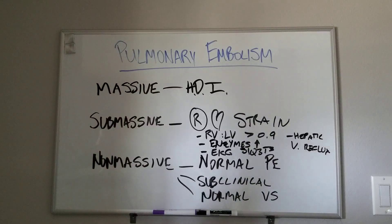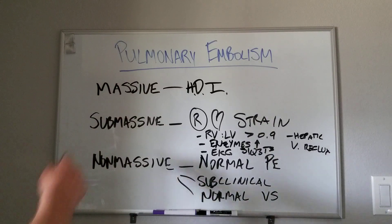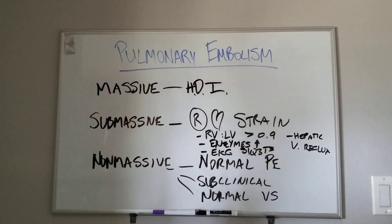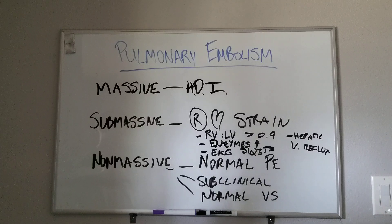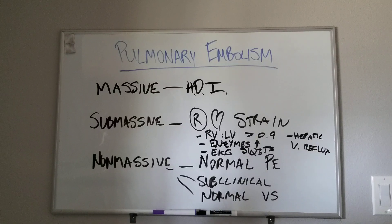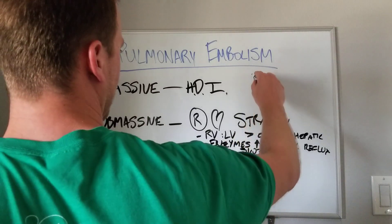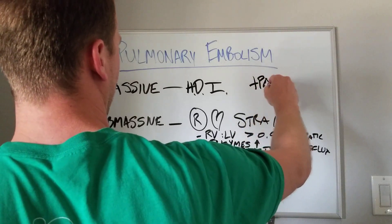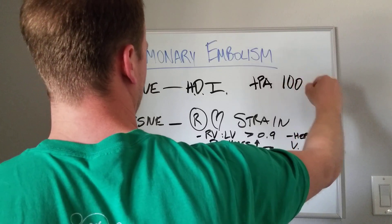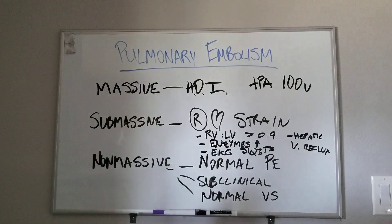So why is this clinically important? For massive PEs, these are the people that are hemodynamically unstable — this is where you would consider lytics, like thrombolytics or embolectomies. Some high-speed centers have pulmonary embolectomy teams. This is when you would consider TPA, and usually in an emergent situation we give 100 mg as the dose for TPA.